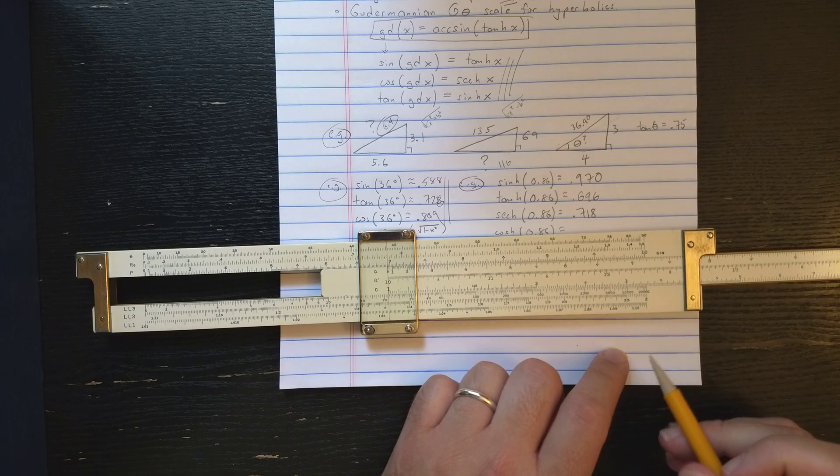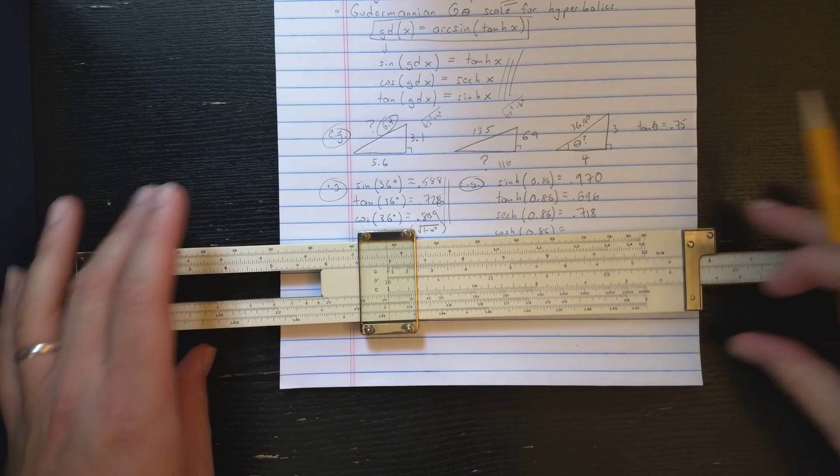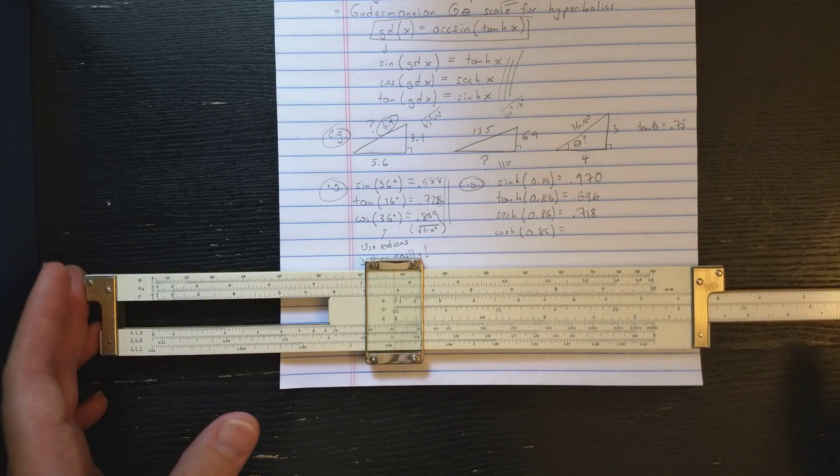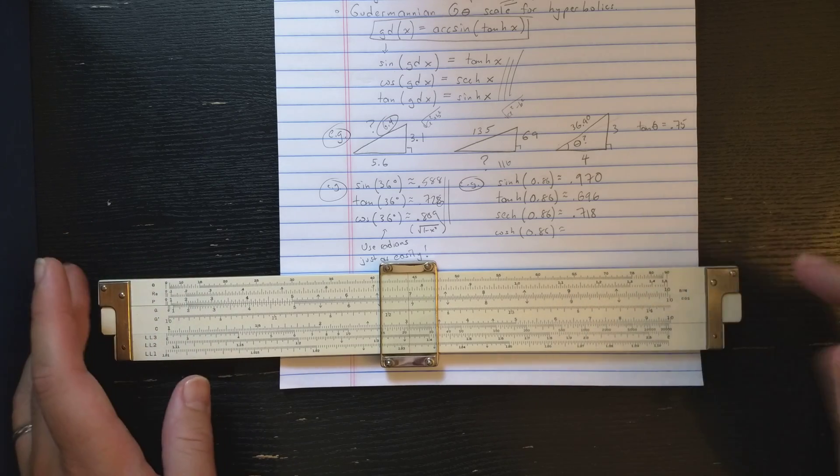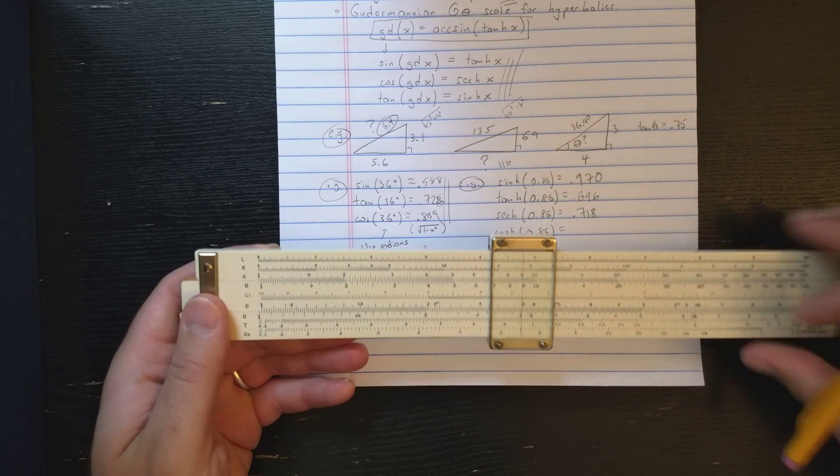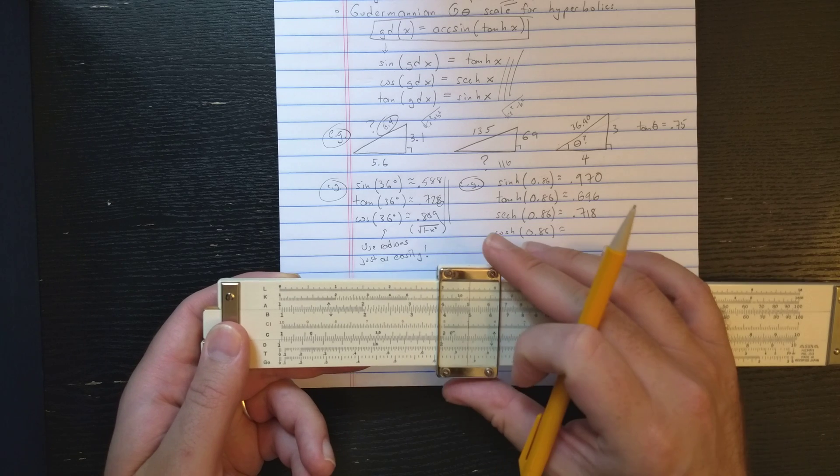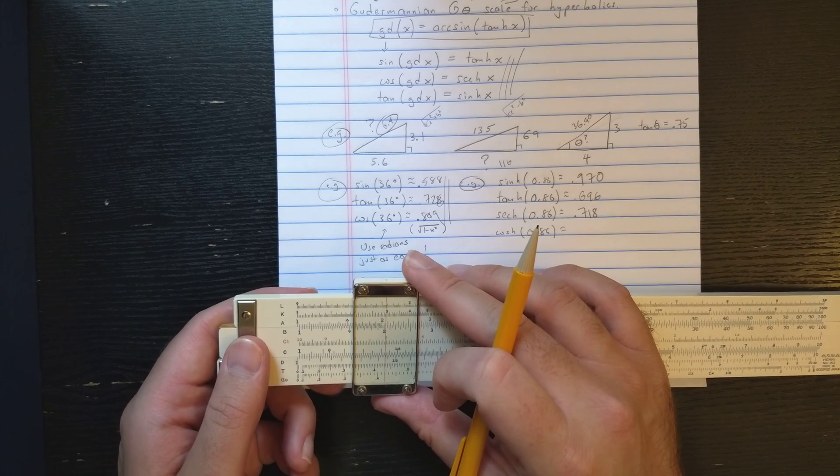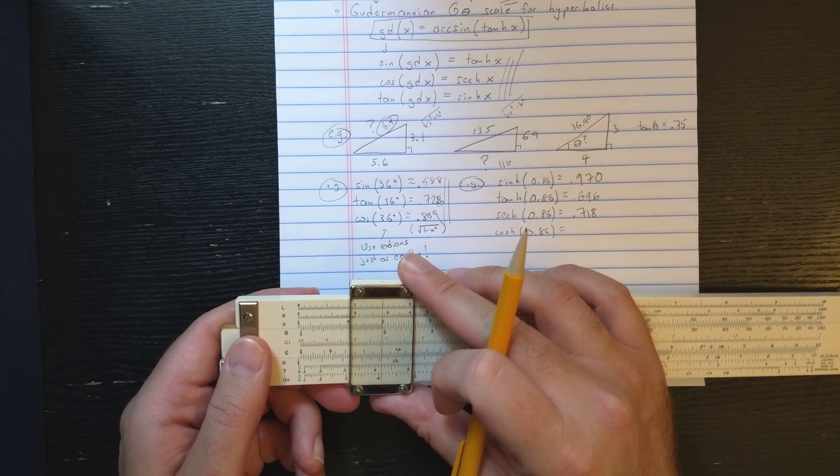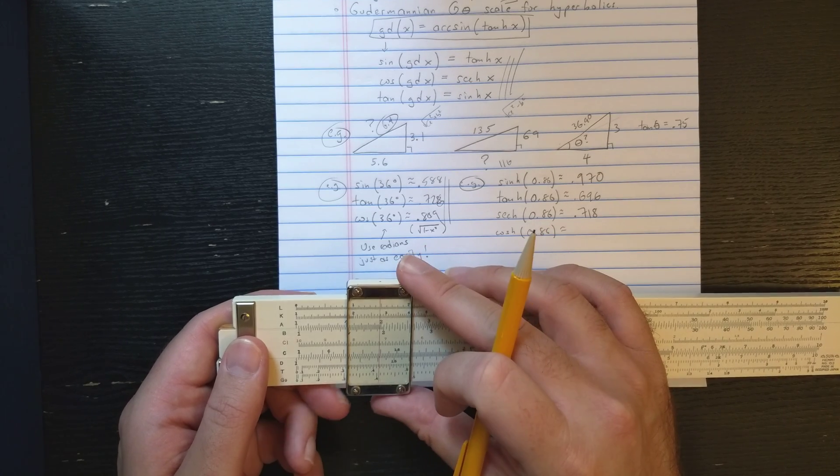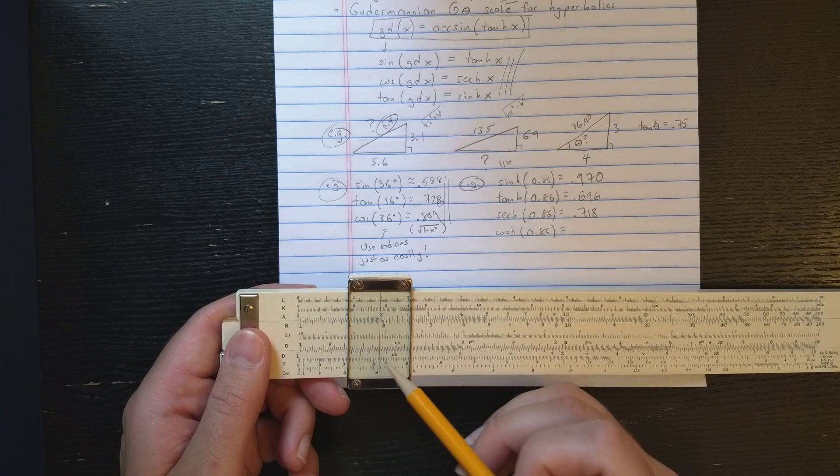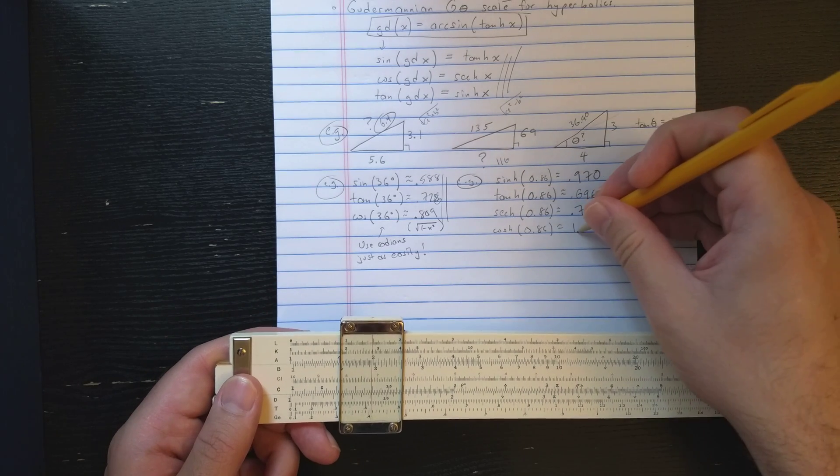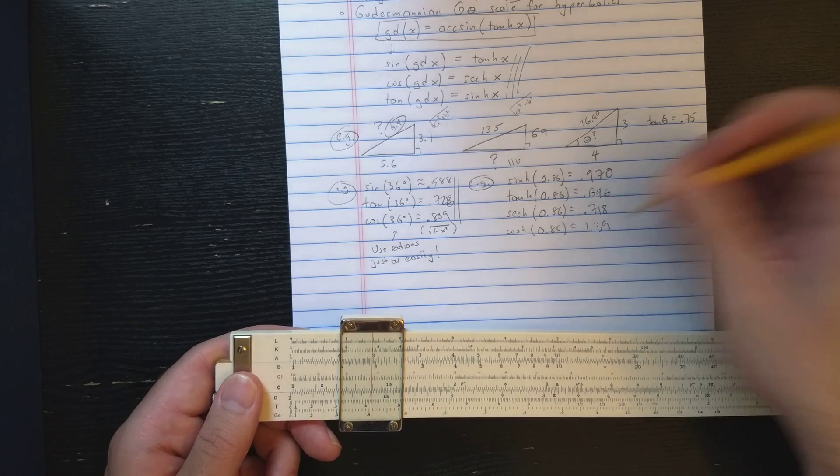But that will actually be hyperbolic secant. Now, to compute cosh, you just need to compute the inverse or the reciprocal. So let's just do that with ci. So 7, let's see, 7, 1, 8. I'll read results on c there. Looks like about 1, 3, 9.